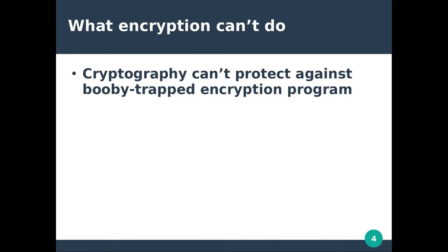We have to go through and test our programs — check hash values whenever we're downloading software, check for running processes or any network connections that are created, or any additional programs running in our system when we run new encryption software. All we can do is be diligent about checking the program we're using, or potentially write it ourselves. But if you're not a cryptographer and you're writing your own encryption program, you're probably getting it wrong. The best we can do as end users is due diligence — check that the application is running as expected and not doing anything overly suspicious.